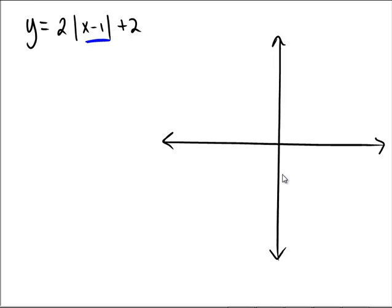What's our horizontal shift? Looks like it's to the right 1 unit. What is our vertical shift? Plus 2 — up 2 units. That puts our vertex right here at 1, 2.